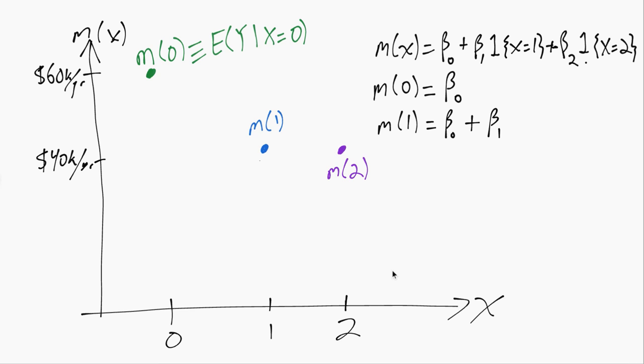The third term, though, still evaluates to 0 because we have an indicator that 1 equals 2, which is not true. So we get a 0 there.